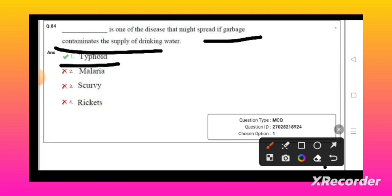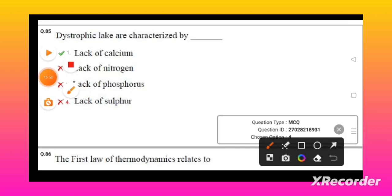Dystrophic lakes are characterized by lack of calcium. First law of thermodynamics is related to conservation of energy.